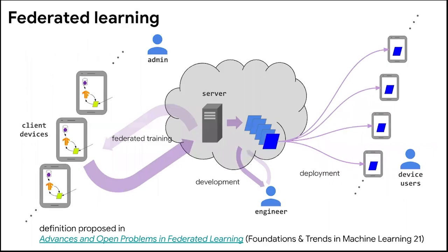In federated learning, you have a number of client devices — those can be computers, phones, institutions, hospitals, banks, and so on. They collaborate to train jointly under the orchestration of a service provider — a joint model trained on the collection of data actually found on each client device. They do so without ever transferring or exchanging the data amongst each other. The server orchestrates the model training, and the learning actually happens on edge.